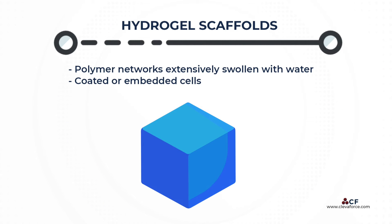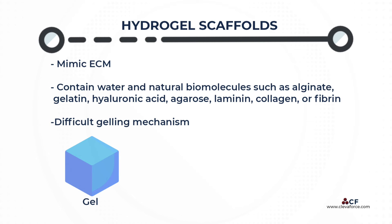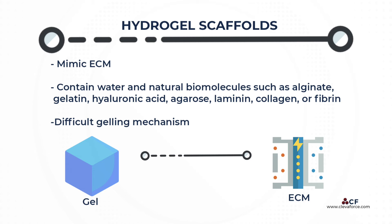Hydrogels are polymer networks extensively swollen with water. Cells can be embedded in these hydrogels or simply coated at the surface. Gels with good mechanical properties are among the most commonly used scaffolds because they have tissue-like stiffness and, to some extent, perfectly mimic the extracellular matrix. This extracellular matrix substitute contains a significant amount of water as well as natural biomolecules such as alginate, gelatin, hyaluronic acid, agarose, laminin, collagen, or fibrin.